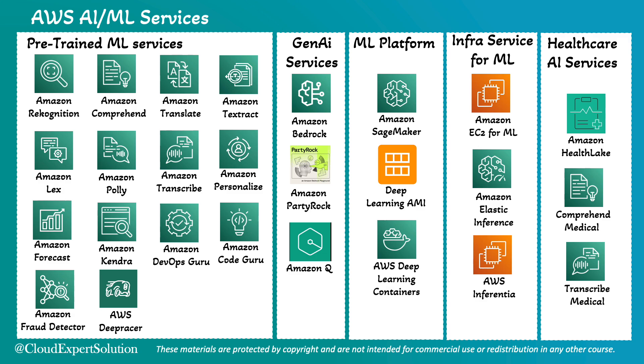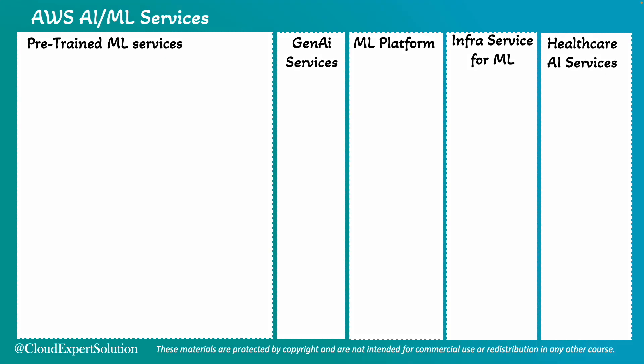First, let's look at the pre-trained services. These services come with pre-built models that you can use right away. For example, Amazon Rekognition is great for image and video analysis, making it easy to add visual search and face detection to your application. A use case could be a photo-sharing mobile application that uses Amazon Rekognition to automatically tag users in photos and detect inappropriate content.